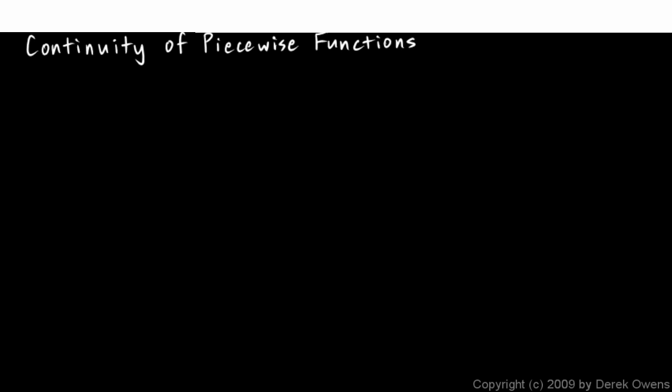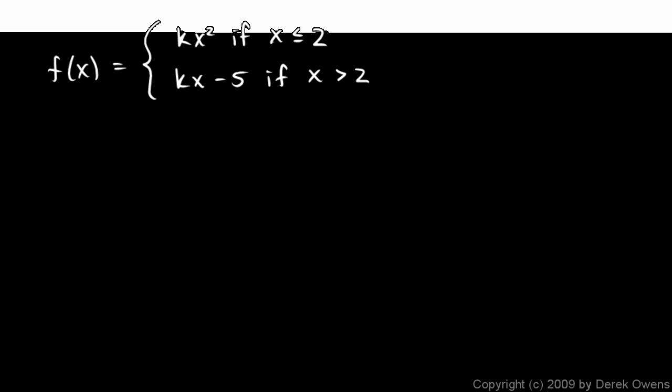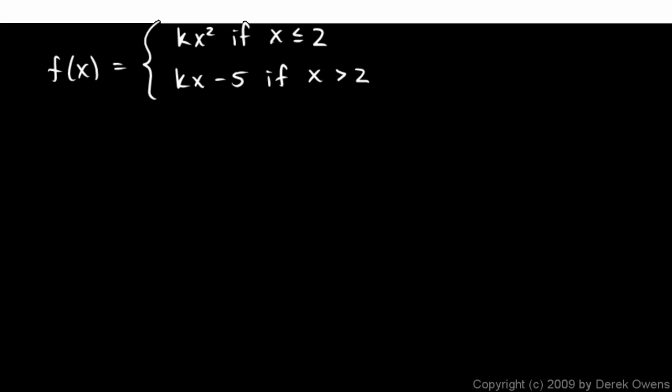Okay, a couple more examples dealing with continuity of piecewise functions. In this one we're told that f is kx squared if x is less than or equal to 2, and kx minus 5 if x is greater than 2.